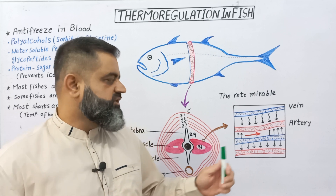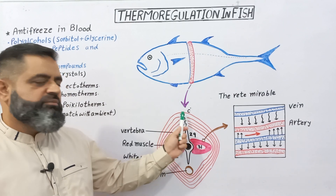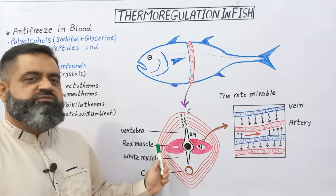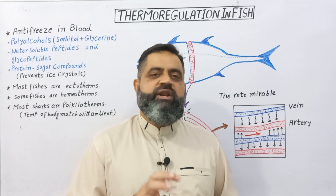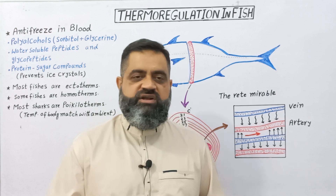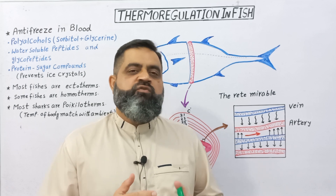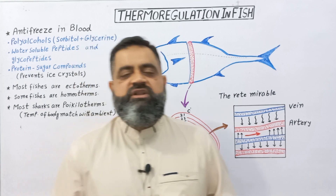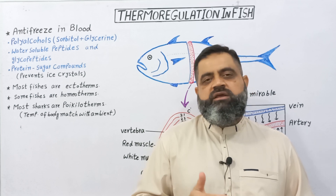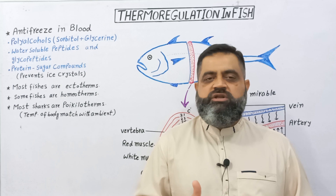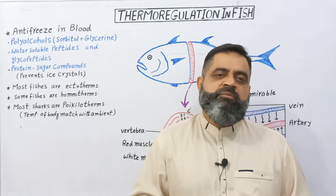In this way, the counter-current exchange method helps these fishes maintain a higher body temperature in the center while a lower body temperature around the periphery. This higher temperature in the center helps red muscles to contract and relax more powerfully and effectively for faster and more efficient locomotion in deeper water when hunting prey. In this way, different fishes living in different conditions and different water temperatures maintain different body temperatures according to their thermoregulatory strategies. That's all for today. See you in the next lecture. Bye-bye.